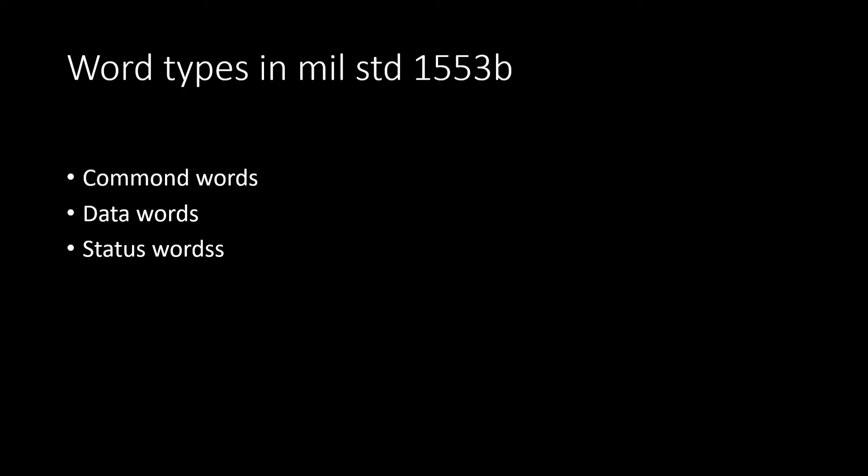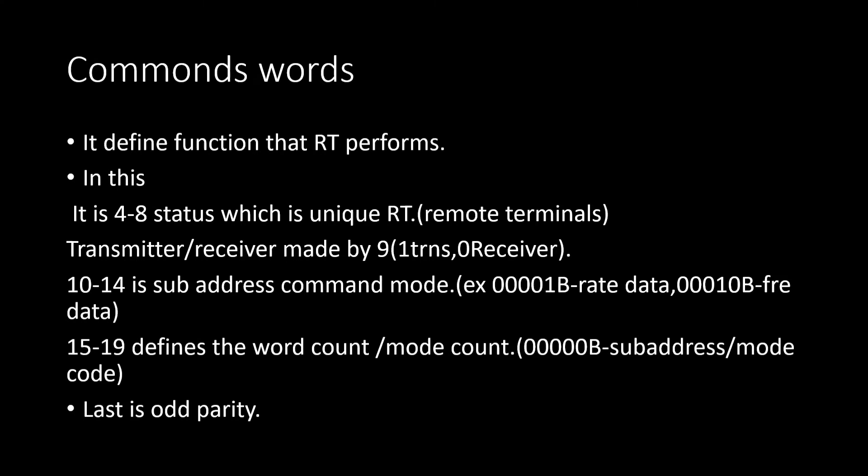What are command words? They define the function that the RT is going to perform. Bits 4 to 8 contain the status which has a unique value. The transmit/receive bit is bit 9 — when it is 1, it is transmit; when it is 0, it is receive.